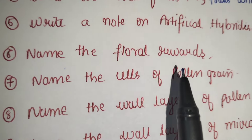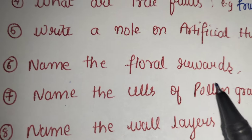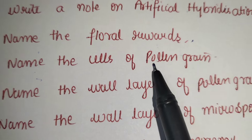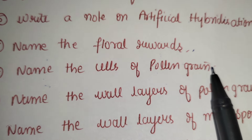Name the floral rewards. Pollen and nectar are floral rewards. Name the cells of pollen grain: vegetative cell and generative cell.